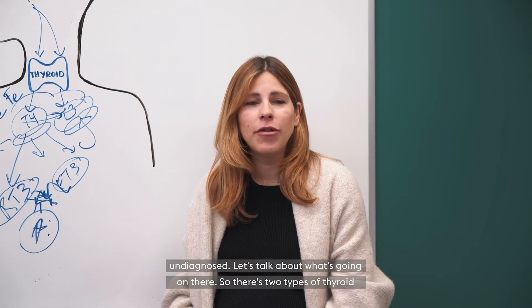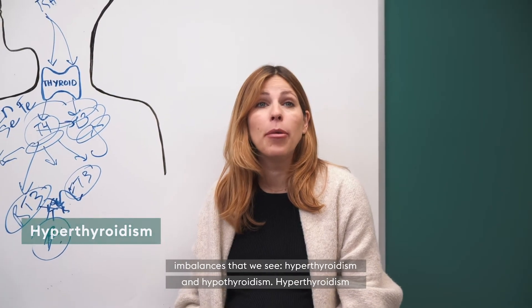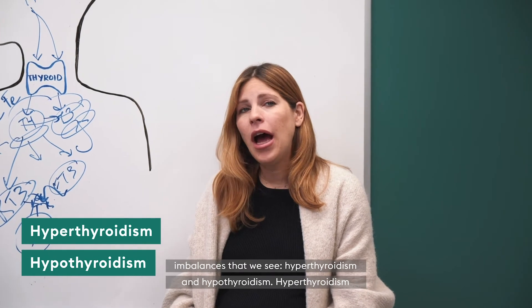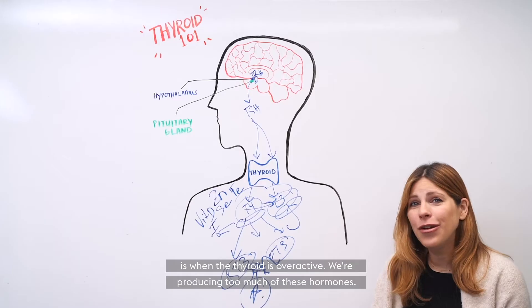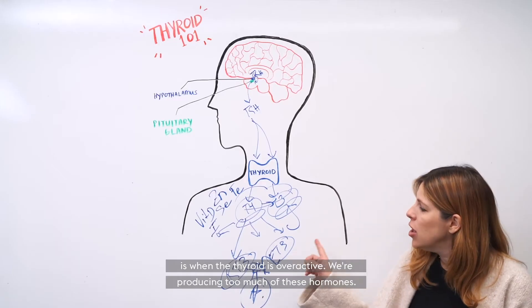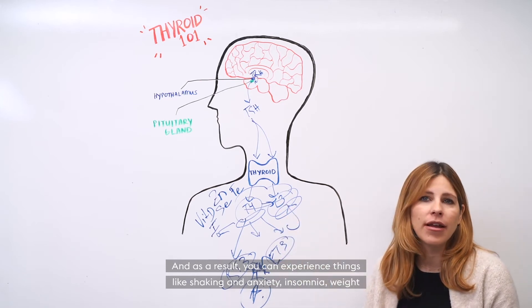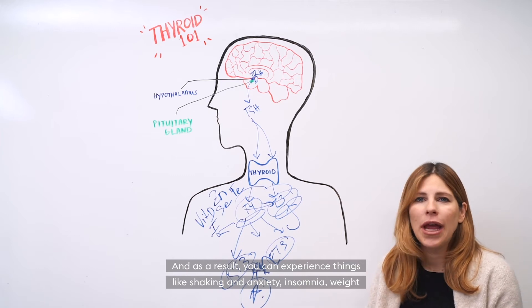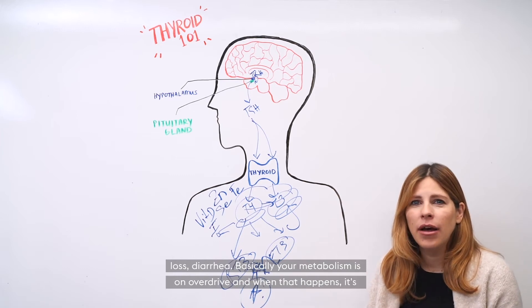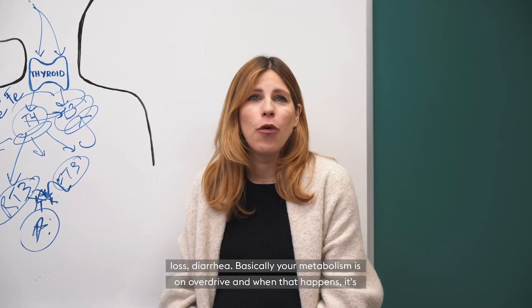So there's two types of thyroid imbalances that we see, hyperthyroidism and hypothyroidism. Hyperthyroidism is when the thyroid is overactive. We're producing too much of these hormones. And as a result, you can experience things like shaking and anxiety, insomnia, weight loss, diarrhea. Basically, your metabolism is on overdrive.